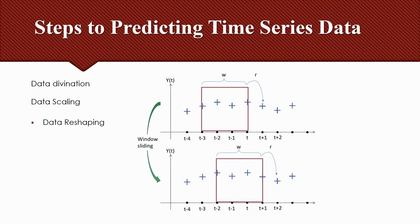The use of prior time steps to predict the next time step is called the sliding window method. In time series analysis, this is also called the lag or lag method. The number of previous time steps is called the window width or size of the lag. In this figure, we see the axis of time and its response. In our case, there are three variables responsible for the value at time t. The next input-output period is obtained by moving the window one time step forward. This sliding window is the basis for turning any time-series dataset into a supervised problem.